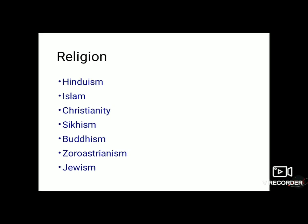Let's look at religion. How many religions are there in India? Hinduism, Islam, Christianity, Sikhism, Buddhism, Zoroastrianism (that means Parsi), and Jainism — these are the religions followed by the people of India. Different religions live in our country and each religion gets equal importance. They live together with harmony in spite of religious diversity.